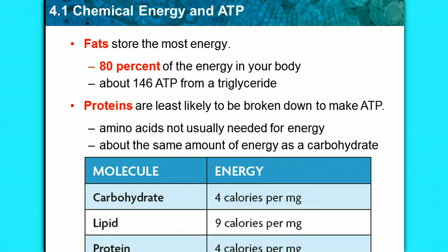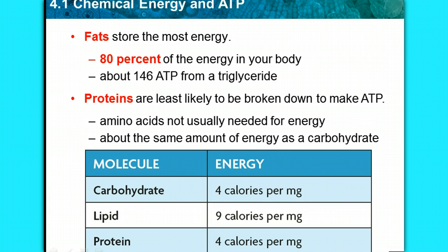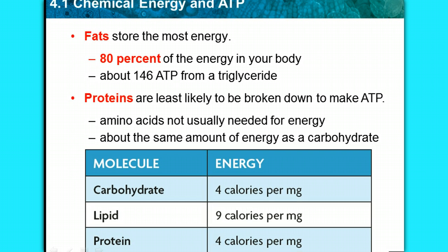Proteins can produce about the same amount of energy as a carbohydrate. Comparing these molecules: carbohydrates give 4 calories per milligram, fats and lipids give the most energy at 9 calories per milligram, and proteins are equal to carbohydrates at 4 calories per milligram.